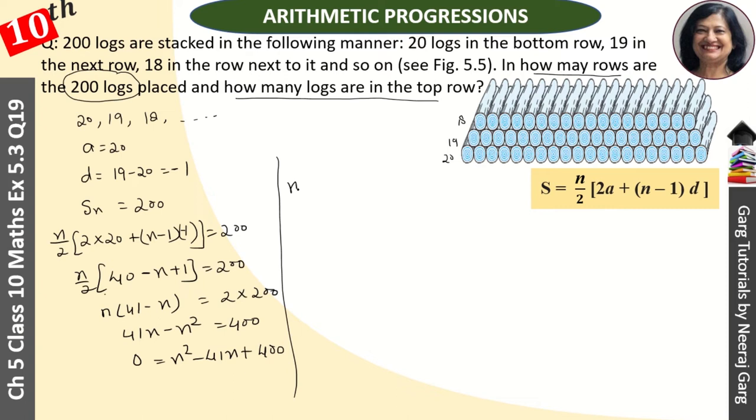Using splitting the middle term: N square minus 41N plus 400 equals 0. When we do middle term splitting, the factors become N square minus 25N minus 16N plus 400 equals 0. 25 plus 16 equals 41, and 25 times 16 equals 400. Taking common: N(N minus 25) minus 16(N minus 25) equals 0. So our factors are (N minus 25) and (N minus 16).